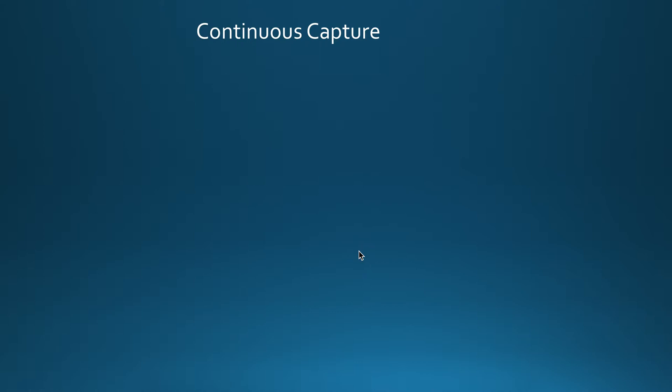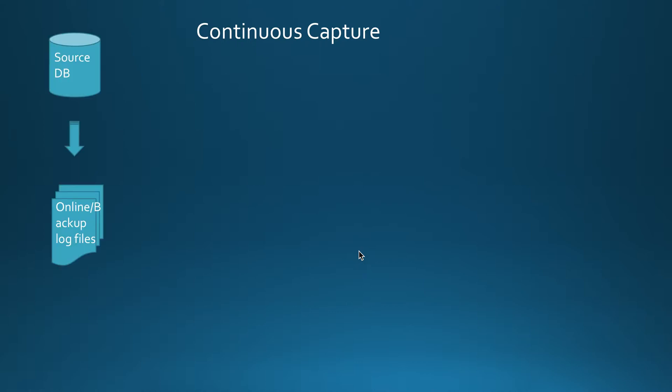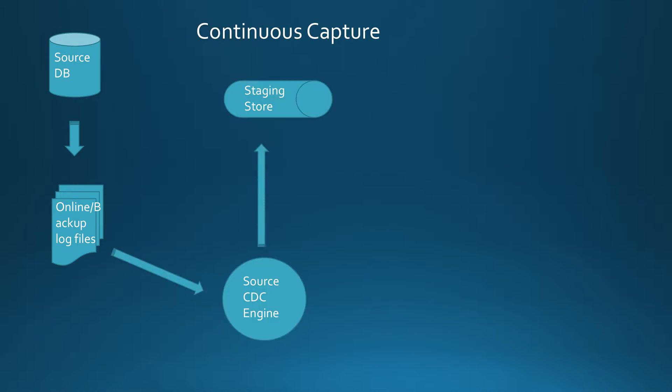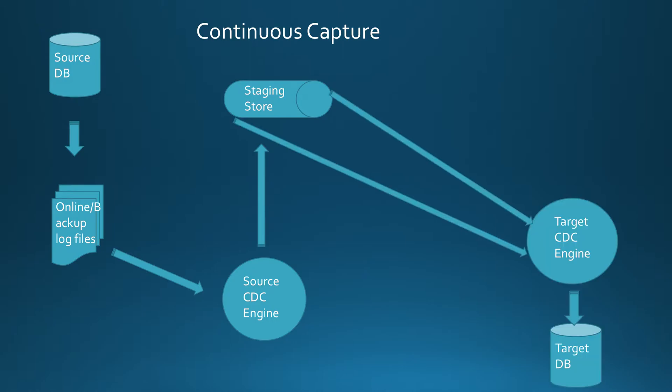Let's look briefly at how IIDR CDC works. The database creates transaction log files. The IIDR CDC source engine actively reads those transaction logs at all times and processes the in-scope entries. These entries are sent to the transaction queue and once committed they are sent to the staging store. Subscriptions read these entries and commit them onto the target database.